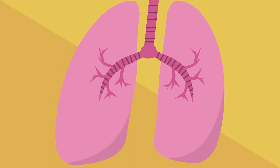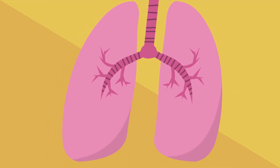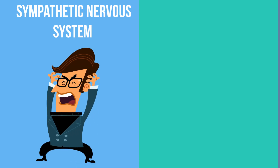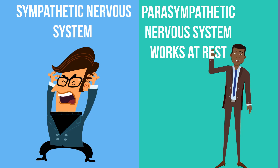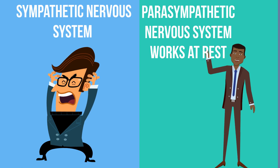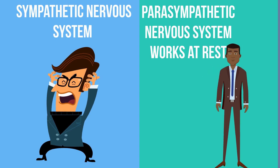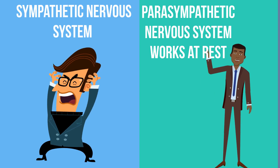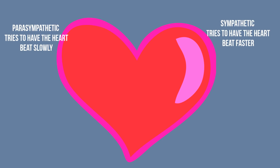It also has two branches: the sympathetic nervous system, which springs into action during emergencies, and the parasympathetic nervous system, that works when the body is at rest. Many times these two branches work in opposite ways. For example, the parasympathetic helps the heart beat slowly, and the sympathetic system when called upon would cause it to beat faster.